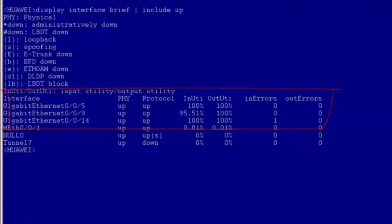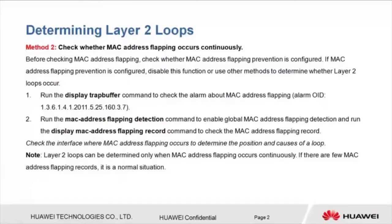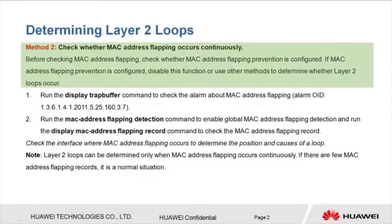Method 2: Check whether MAC address flapping occurs continuously. Before checking MAC address flapping, verify whether MAC address flapping prevention is configured. If MAC address flapping prevention is configured, disable this function or use other methods to determine whether Layer 2 loops occur. Two methods can be used to check MAC address flapping.